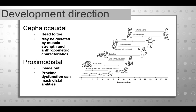Development also happens in a proximo-distal fashion — inside out. We gain core muscle control before we can use our arms, hands, and legs. When a baby first learns to sit, it takes all of his energy just to hold his head and trunk upright. If you try to hand him a toy or if he tries to wiggle his legs, he'll lose that balance immediately. He has to develop good core proximal stability before he can have distal mobility. This is why proximal dysfunction can mask distal abilities — if you can't sit up straight, you probably aren't going to be able to effectively use your hands.